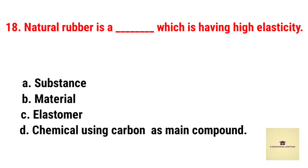Natural rubber is a material which has high elasticity. Correct answer is elastomer.